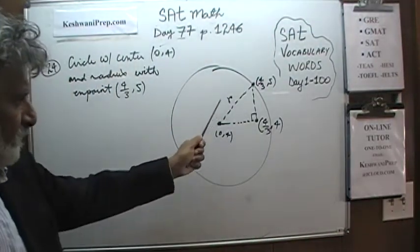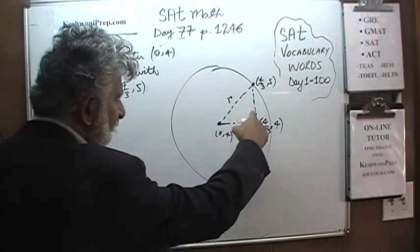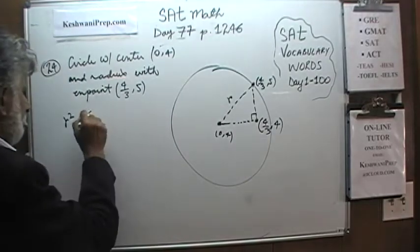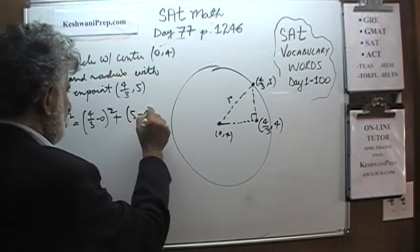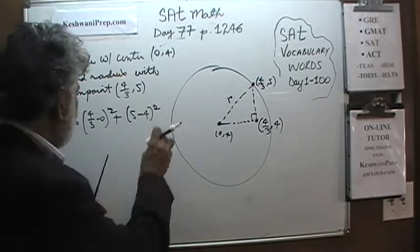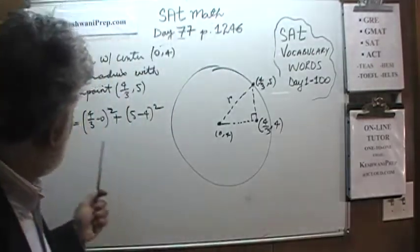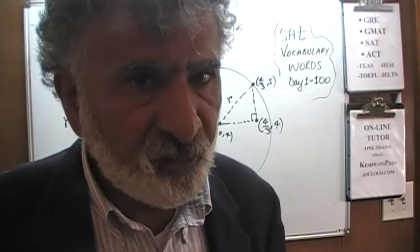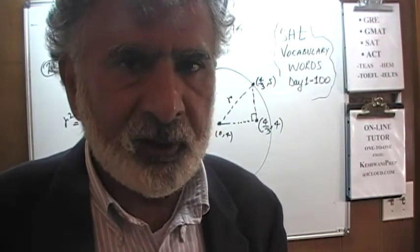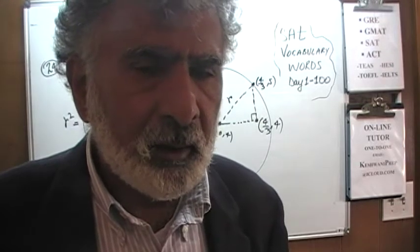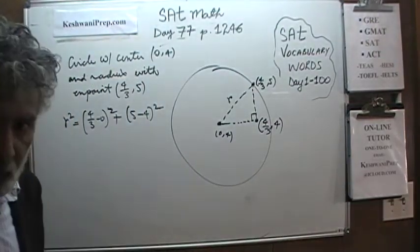The Pythagorean theorem tells us that the radius squared — which is the hypotenuse — equals the square of the horizontal distance plus the square of the vertical distance. The horizontal distance is 4/3 − 0 and the vertical distance is 5 − 4. This is also sometimes referred to as the distance formula. The distance formula and the Pythagorean theorem are one and the same — the distance formula is simply Pythagorean theorem incognito.